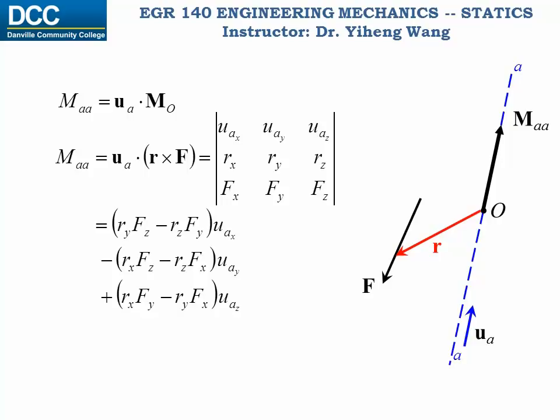Once again, UA is the unit vector along the AA axis about which you want to find the moment caused by the force vector F. And R is an arbitrary vector as long as it starts somewhere on the AA axis and ends somewhere on the force.